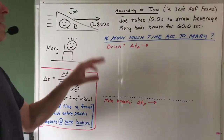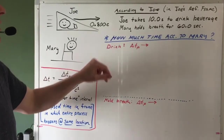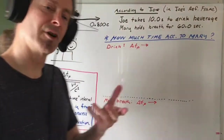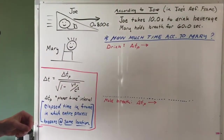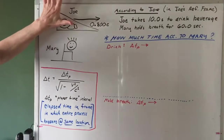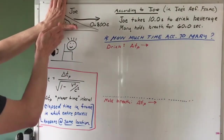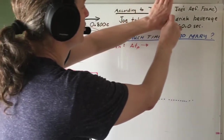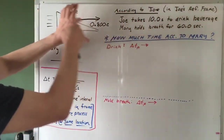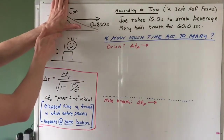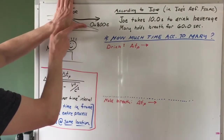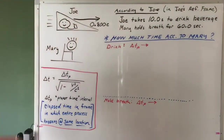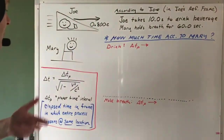So let's figure out how long it takes, according to Mary, for Joe to drink the beverage. We need to identify who, if anyone, observes the so-called proper time for drinking the beverage — is it Joe or is it Mary? Imagine we're following Joe. We attach a coordinate system to Joe's spacecraft. Joe starts drinking, Joe ends drinking — all that's happening at the same location. That whole process basically happens at the origin of Joe's coordinate system. So Joe observes the so-called proper time interval for this process.